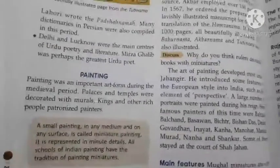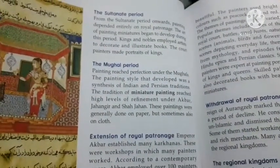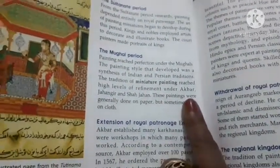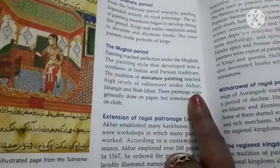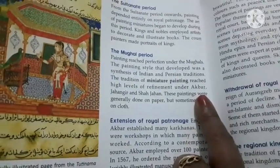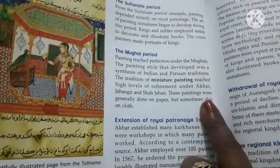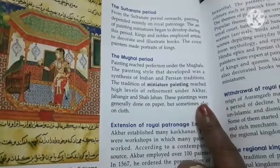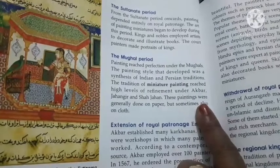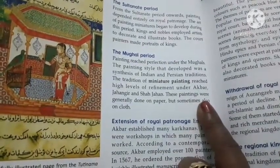In the first period, from the Sultanate period onwards, paintings depended entirely on royal patronage. The art of painting miniatures began to develop during this period.